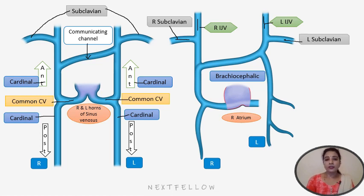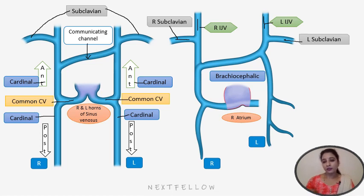The subclavian vein develops in the region of the upper limb by the enlargement of intersegmental veins in that region. It develops from the intersegmental vein, which further continues into the upper limb — draining from the upper limb as the brachial vein, which continues as the axillary vein, which in turn continues as the subclavian vein.